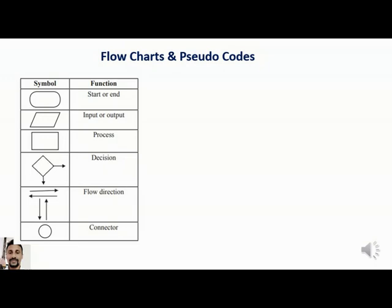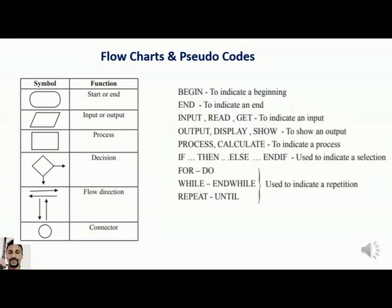For pseudocode, there are standard words we can use. BEGIN indicates a beginning. END indicates an end. INPUT, READ, and GET are used to indicate an input. OUTPUT, DISPLAY, and SHOW are used to indicate an output. PROCESS and CALCULATE indicate a process — these are not essential but can be used. IF-THEN-ELSE and IF are used to indicate selection. DO-WHILE, WHILE, and REPEAT-UNTIL are used for indicating repetition, when the same thing repeats again and again.